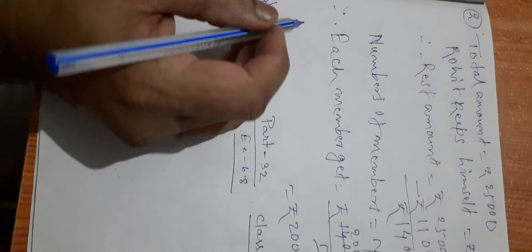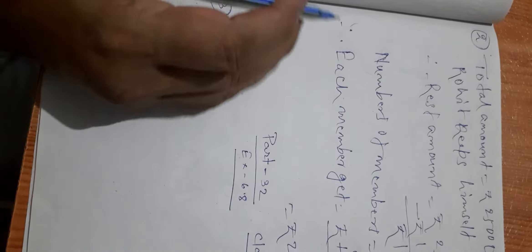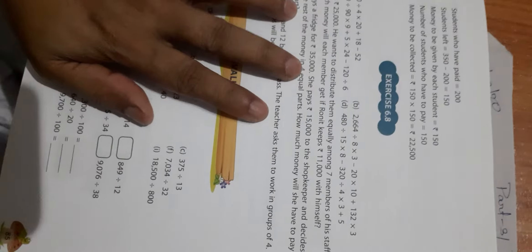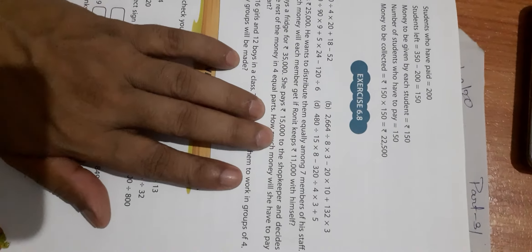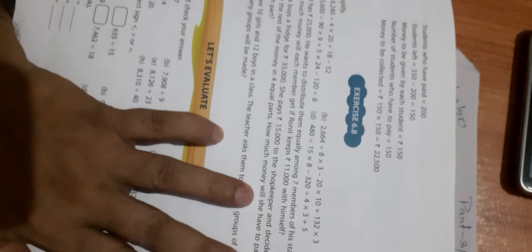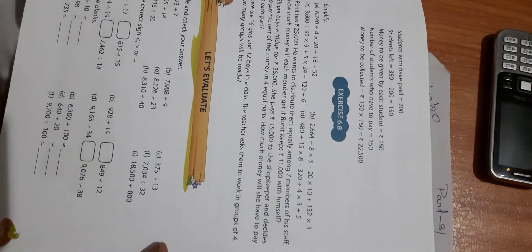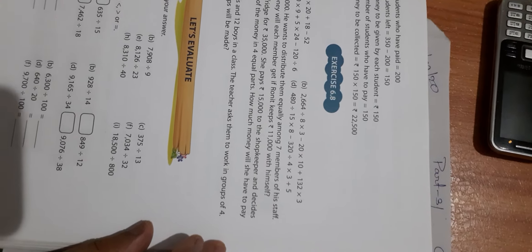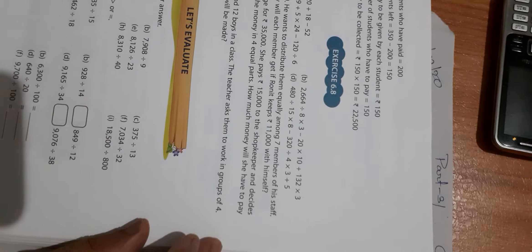In Exercise 6.8, we have been told the first and second problems. Now, Number 3: Sipra buys trees for Rs 35,000. She pays Rs 15,000 to the shopkeeper and decides to pay the rest of the money in 4 equal parts. How much money will she have to pay in each part?